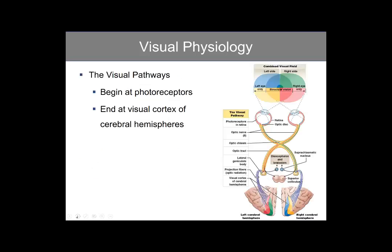The visual pathways begin at the photoreceptors and end at the visual cortex of the cerebral hemispheres, localized in the occipital lobe of the brain. From the eye, you have the optic nerve crossing at the optic chiasm there at the hypothalamus, and then they are projected back eventually onto the occipital lobe of the cerebrum where the visual cortex exists.